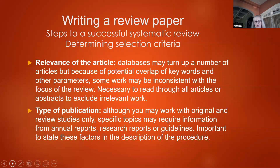In terms of relevance, databases may turn up a number of articles, but because of the potential overlap of keywords and other parameters, some works may be inconsistent with the focus of the review. It becomes necessary to read through all articles or abstracts to either include or exclude relevant or irrelevant work. Regarding type of publication, although you may want to work with original and review studies only, specific topics may require information from annual reports, research reports, or guidelines. If including these, be sure to state these factors in a description of your procedure.